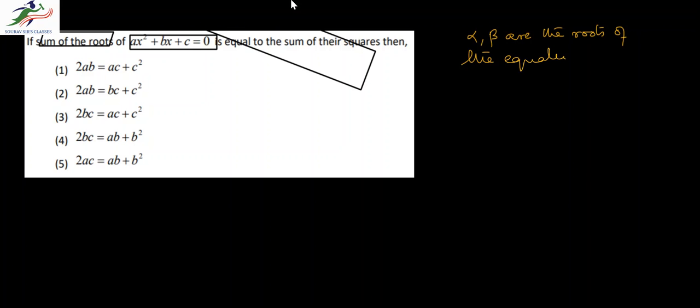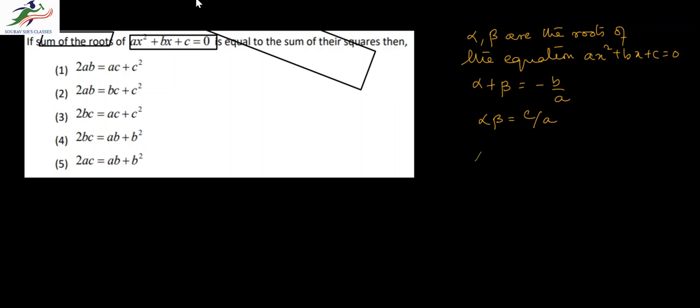If alpha and beta are the roots of the equation ax² + bx + c = 0, then alpha + beta = -b/a and alpha·beta = c/a. Therefore, alpha² + beta² is the sum of the squares of the roots, which equals (alpha + beta)² - 2·alpha·beta.